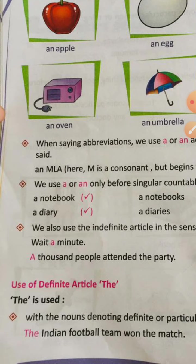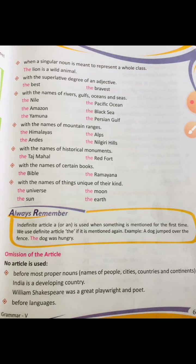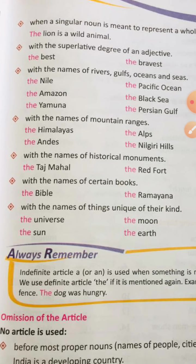Turn your page. 'The lion is a wild animal' — we are talking about a particular animal. When we talk about superlative degrees, for example 'the best', 'the bravest'. We also use 'the' for particular oceans, seas, rivers like Ganga, Nile, Pacific Ocean; particular mountain ranges; particular historical monuments like the Taj Mahal; and particular religious books.